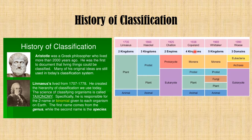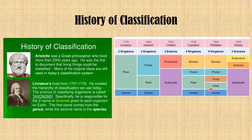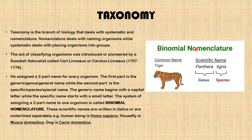In 1938, Copeland classified all living organisms into four kingdoms: monera, protist, plant, and animal. In 1969, Whittaker gave the five-kingdom classification: monera, protist, fungi, plants, and animals. In 1990, Woese gave the three-domain system: eubacteria, archaea, and eukaryotes.